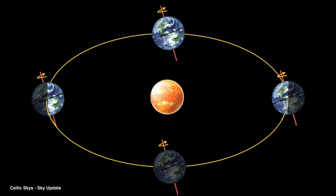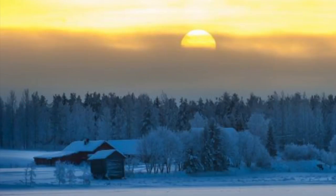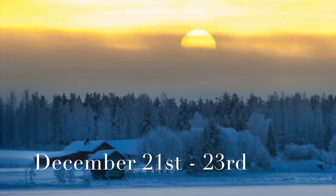As the Earth continues its orbit around the Sun in the first few weeks of December, the angle its axis makes away from the Sun continues to increase. Therefore, the days continue to get shorter and the nights longer in the Northern Hemisphere. However, it reaches a point where the axis is at its maximum angle away from the Sun, and as the orbit continues, the axis starts to tilt back towards the Sun. At the point of maximum angle, we call it the winter solstice — this is when the days are at their shortest and the nights are at their maximum. The winter solstice takes place each year sometime between December 21st and the 23rd.